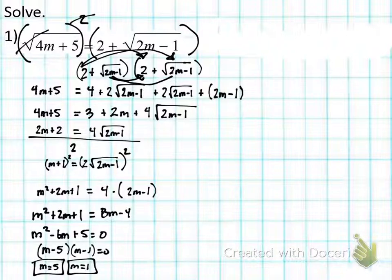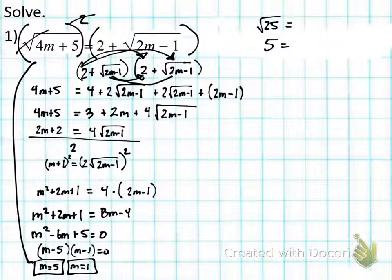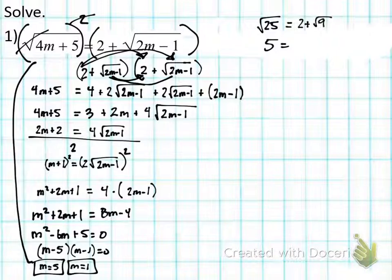Last step — what should I always do? Check for extraneous solutions. Plugging in m = 5: √(4×5 + 5) = √25 = 5 on the left. Right side: 2 + √(2×5 − 1) = 2 + √9 = 2 + 3 = 5. Five equals five — that's a good solution. Plugging in m = 1: √(4×1 + 5) = √9 = 3. Right side: 2 + √(2×1 − 1) = 2 + √1 = 2 + 1 = 3. Three equals three — both are valid solutions.